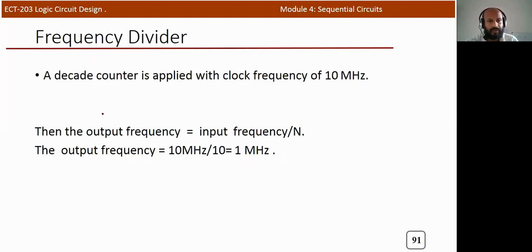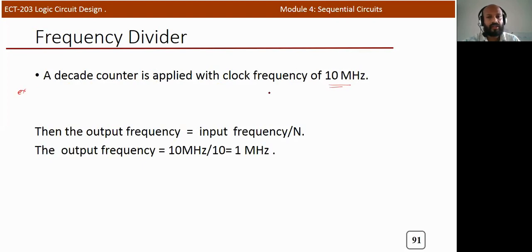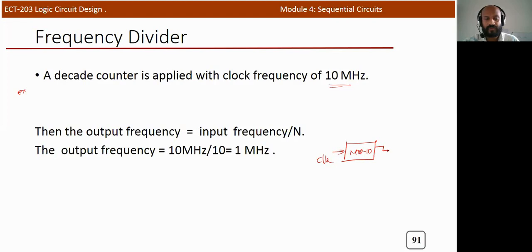For a truncated counter — for example a decade counter — the output frequency formula is different. If it is a mode n counter, the output frequency becomes f/n. In the specific case of a decade counter (mode 10) with an input clock of 10 MHz, the output frequency is 10 MHz/10 = 1 MHz.